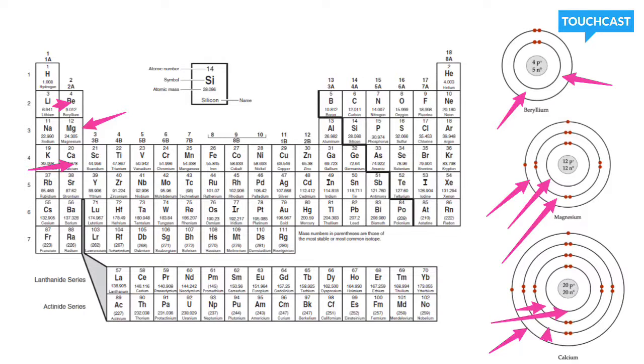So, it's pretty simple. The period and everything inside, let's say period 5, will have five energy levels.